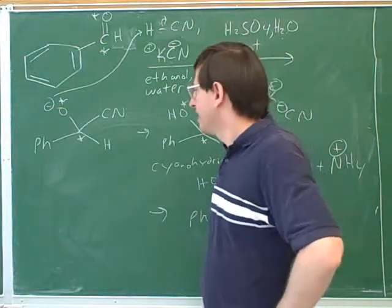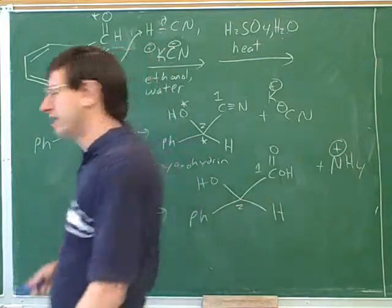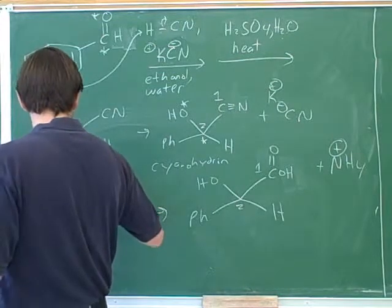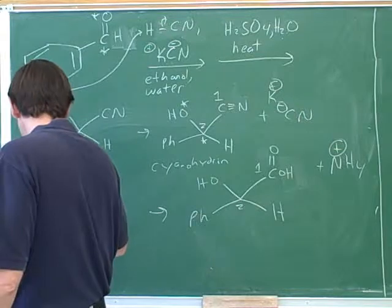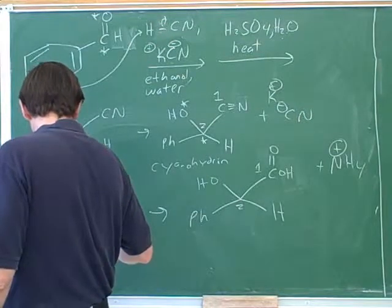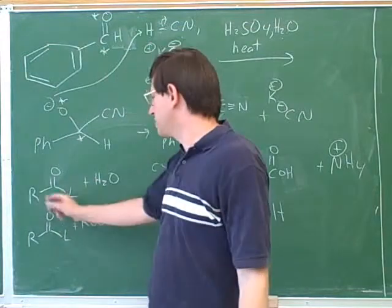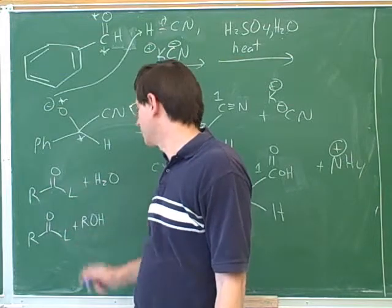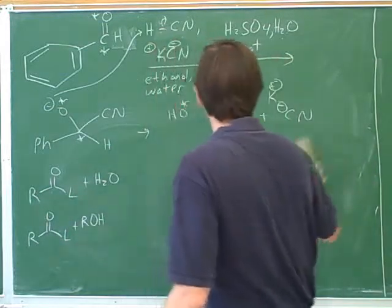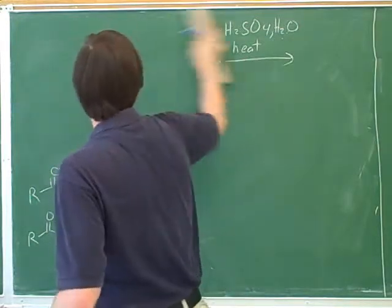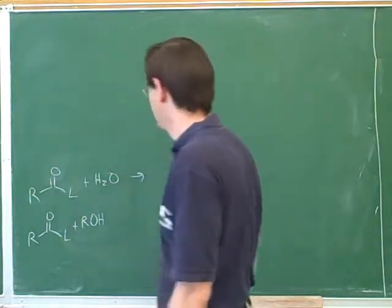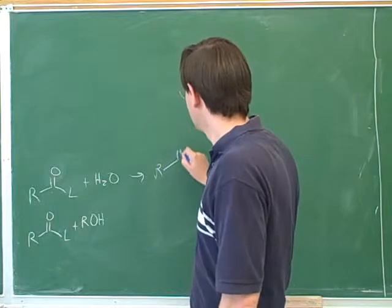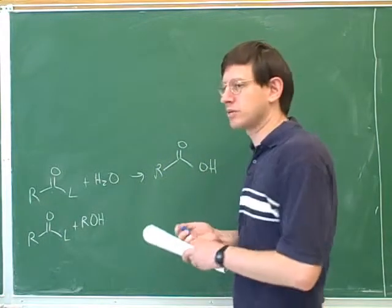But we're not going to go through that because it's very similar to an attack with OH. So here's a general form of a carboxylic acid derivative. So what product would we get if we react this carboxylic acid derivative with water? You're going to get a carboxylic acid. What's the name of that reaction? It's a hydrolysis.